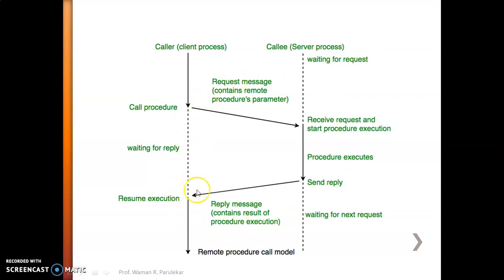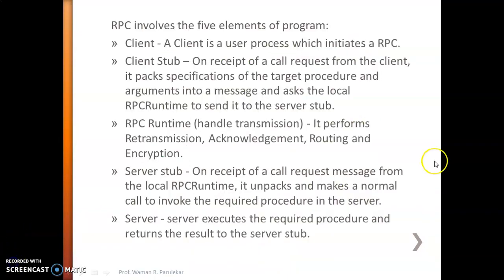This is the remote procedure call model. After sending the reply, the server process will again wait for the next request. RPC involves five elements of program: number one is client, number two is client stub, number three is RPC runtime, number four is server stub, and number five is server.